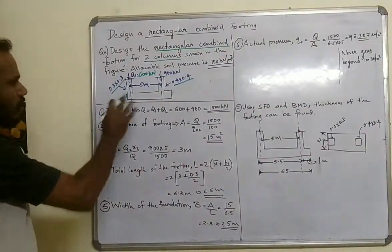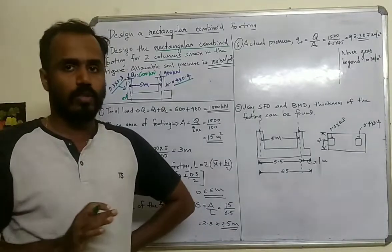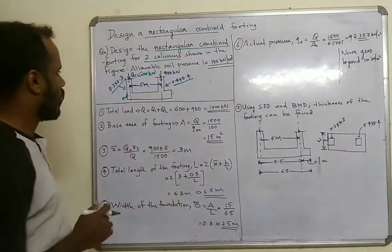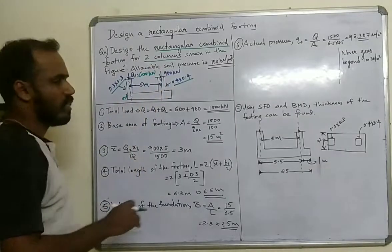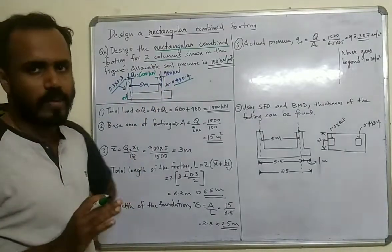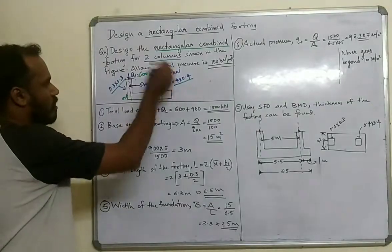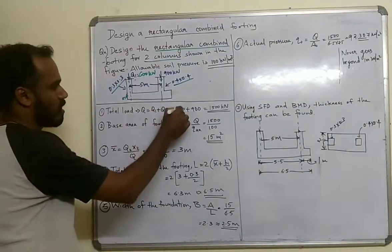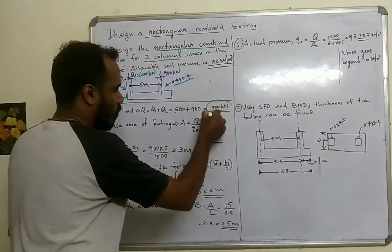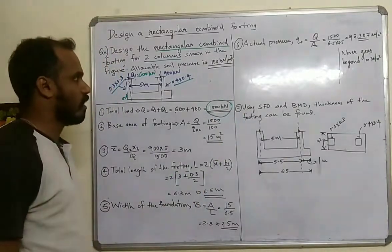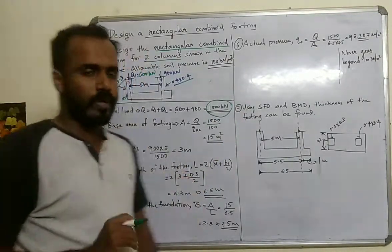The first step is to calculate the total load. Q is equal to Q1 plus Q2. That is 600 plus 900, which equals 1500 kN. That is the total load.